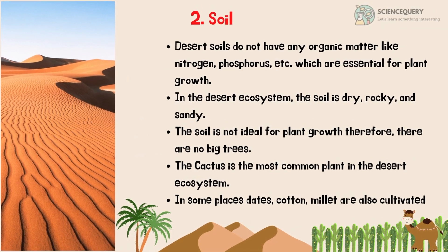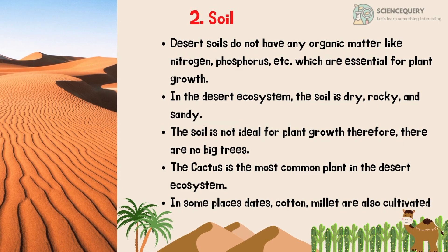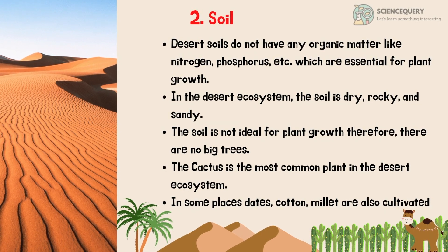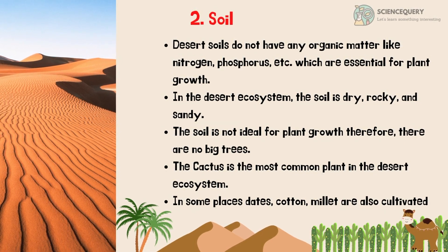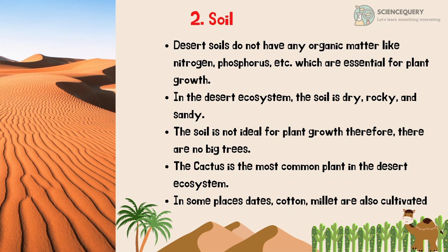The second abiotic factor is the soil. Desert soils do not have any organic matter like nitrogen and phosphorus, which are essential for plant growth. In the desert ecosystem, the soil is dry, rocky and sandy. The soil is not ideal for plant growth, therefore there are no big trees. The cactus is the most common plant in the desert ecosystem.